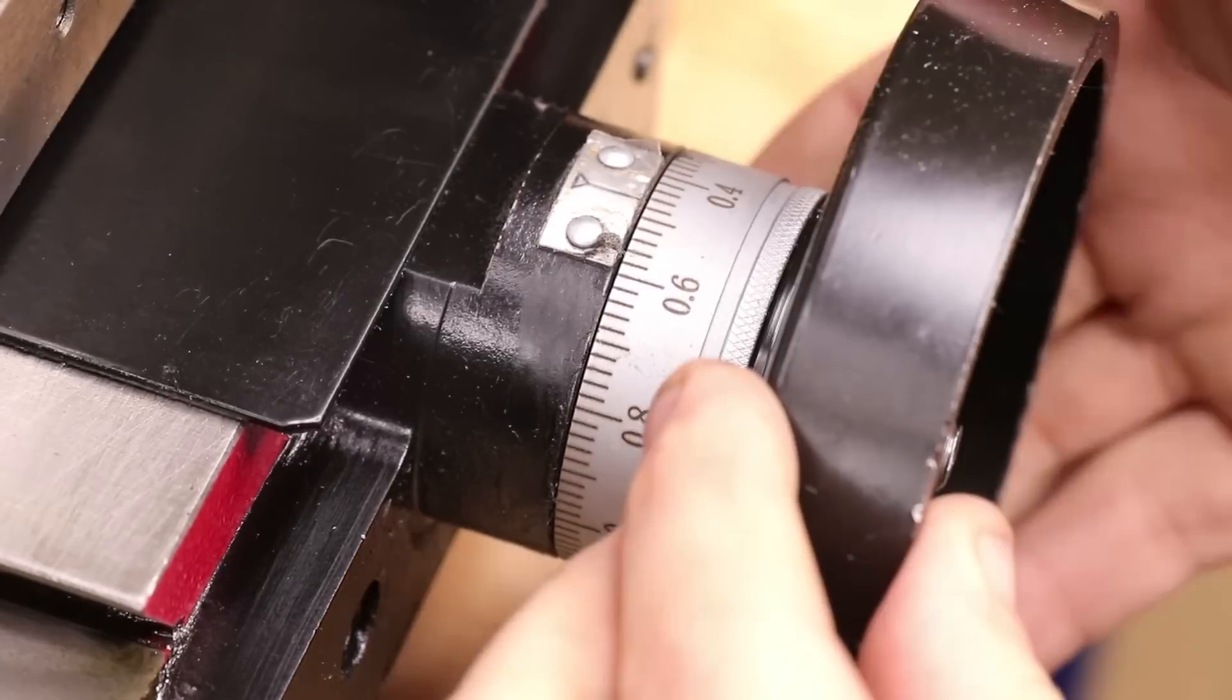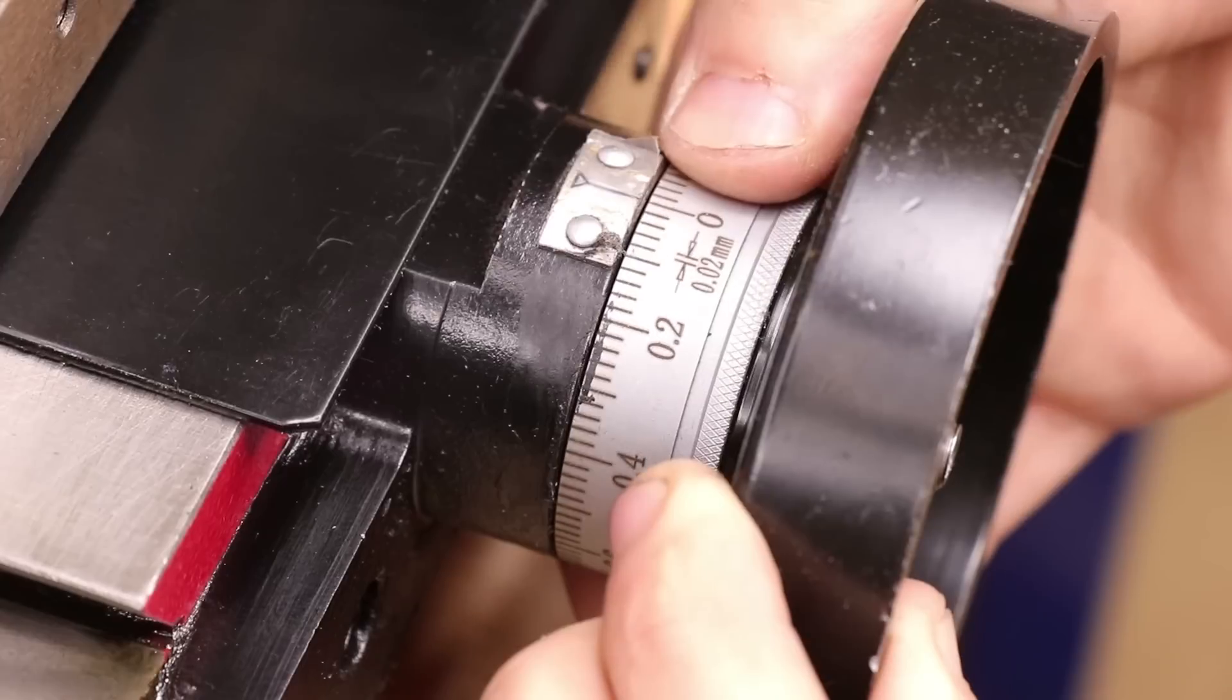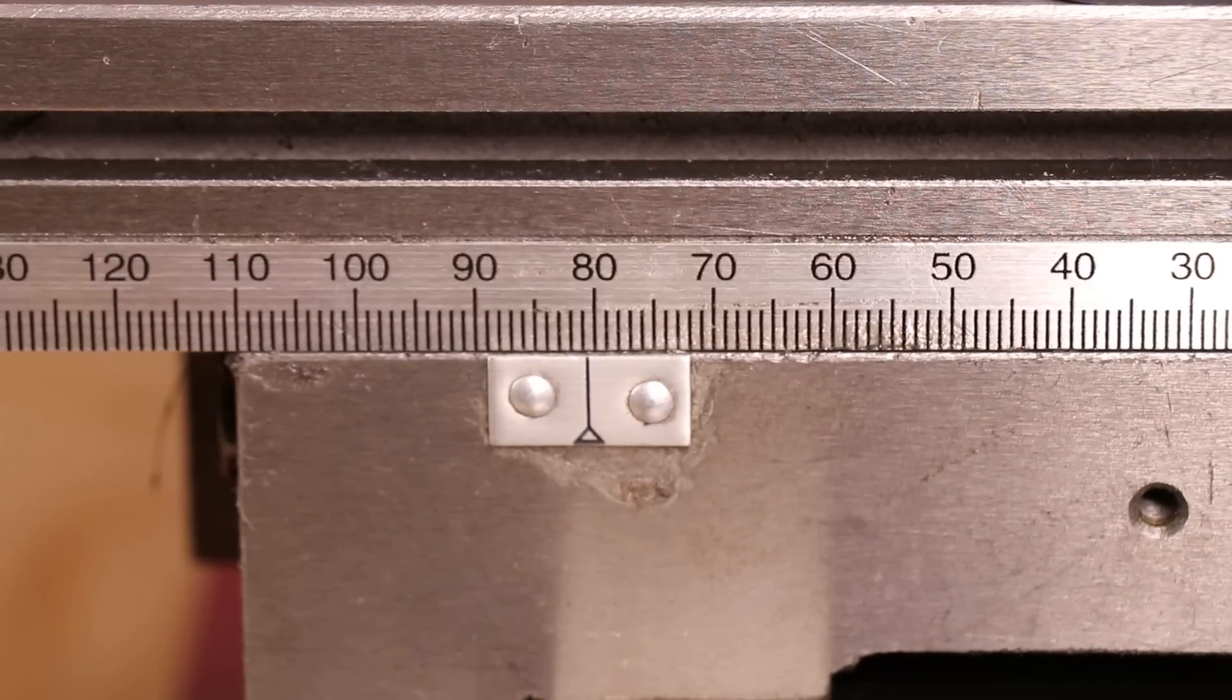Unlike the mini lathe though, the pitch of the lead screw is 2mm, rather than 1mm. So, for every rotation of the handwheel, the table will advance 2mm.